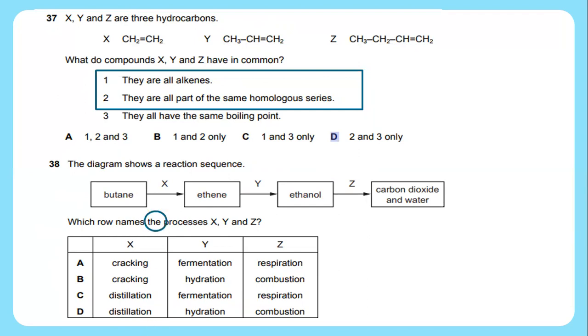Question 38: The diagram shows a reaction sequence. Butane goes through process X to produce ethene, then through process Y to produce ethanol, and then process Z to produce carbon dioxide and water. X is the process when butane goes through cracking, it becomes ethene. The hydration of ethene produces ethanol. When ethanol goes through a process of combustion, it produces carbon dioxide and water.